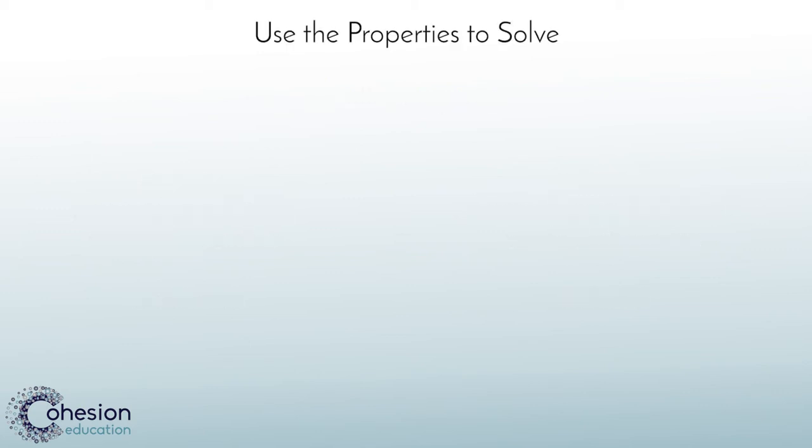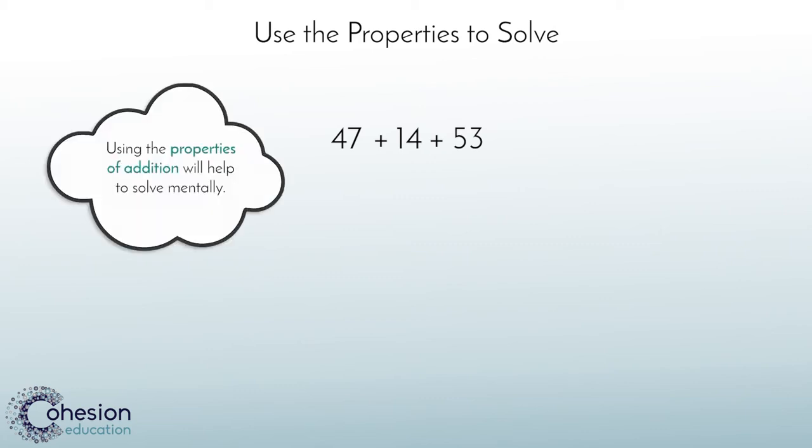Now that we have defined all of the properties, let's take a look at a problem to apply them to to make solving easier. Looking at our problem, 47 plus 14 plus 53, this may seem easy for a 5th grader to line these numbers up vertically then add them. However, if we choose a property to apply, we can add these numbers up mentally.